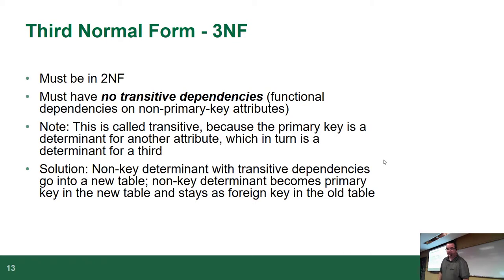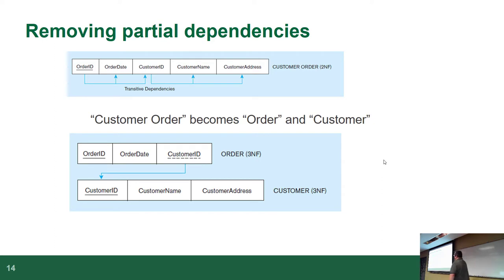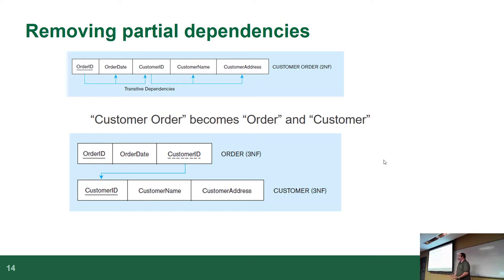The fix is to take that transitive dependency and break it out to its own table. The order only has the order ID, the order date, and the customer ID. Then there's another table for customers with the customer ID, the name, and their address. At this point you're able to change any piece that's not a key without affecting the rest of the database. The customer changes their name — you change it in one place. The price of the product changes — you change it in one place. The color changes — you only need to update it once.